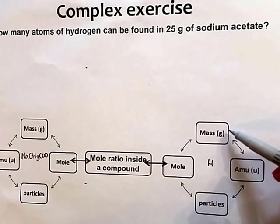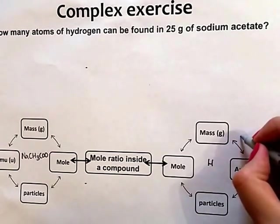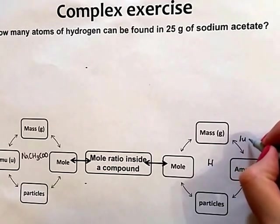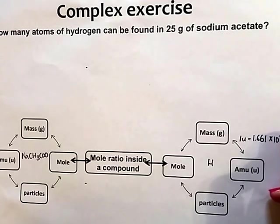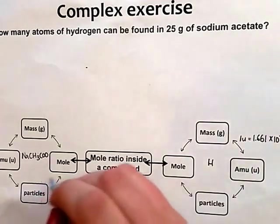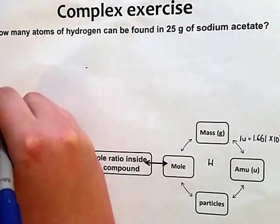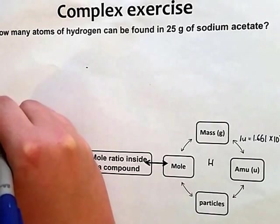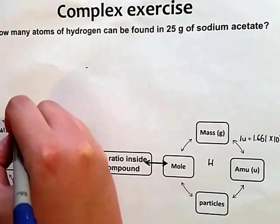As we know from mass to atomic mass units, our conversion factor is 1 atomic mass unit is 1.661 times 10 to the minus 24 grams. I'm going to fill that in on the other side. 1 atomic mass unit is 1.661 times 10 to the minus 24 grams.